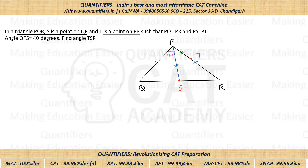Let us join T and S — we have to find angle TSR. Let's assume that angle TSR to be x. Now in the bigger triangle PQR, we have PQ equal to PR, so it is an isosceles triangle. Since two sides are equal, two angles will be equal — let's say both base angles are y. So angle PQR = y and angle PRQ = y.